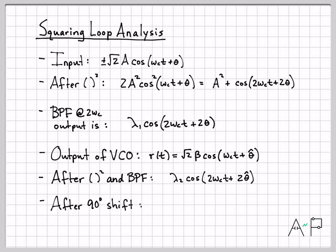The output of the bandpass filter went through a 90 degree phase shifter. So now this goes through a phase shifter, which means we're going to shift it by pi over 2. And then I can use my trig identity just like I did in the previous video. Cosine shifted by pi over 2 is minus sine.